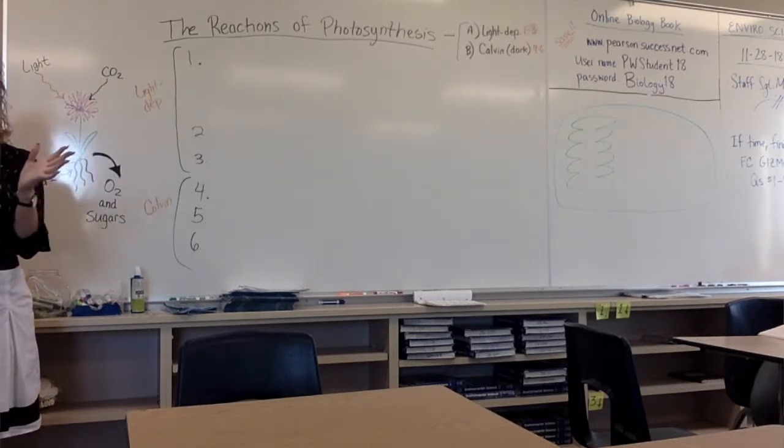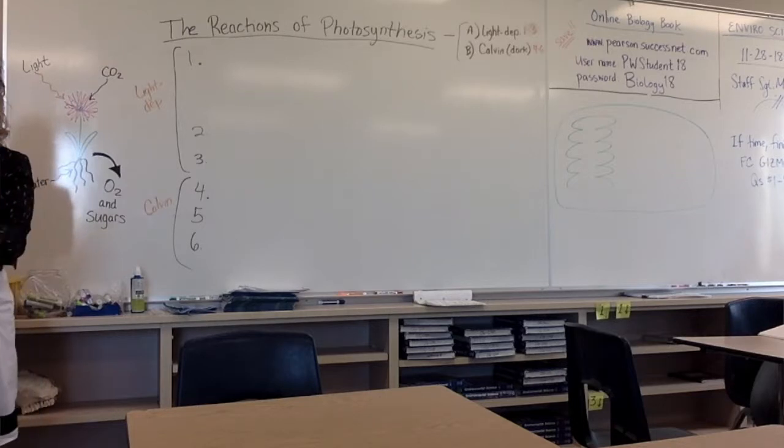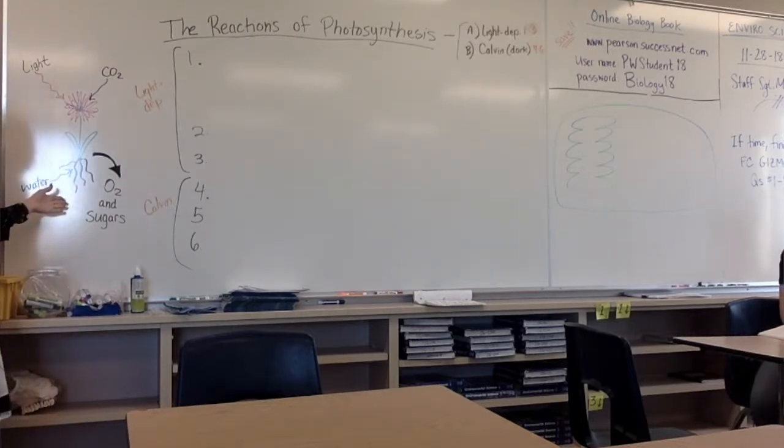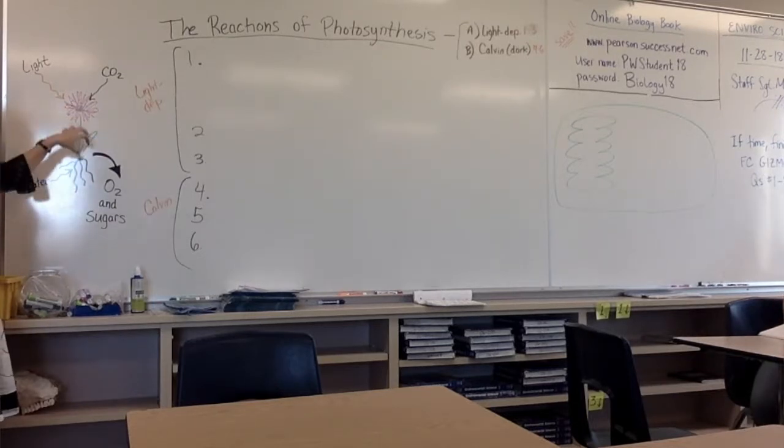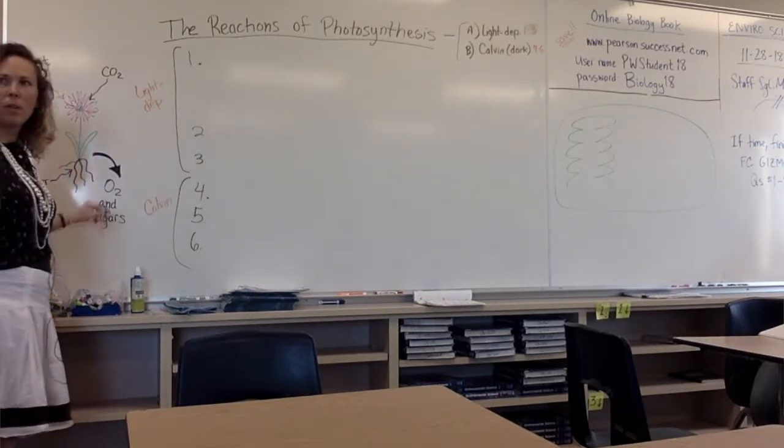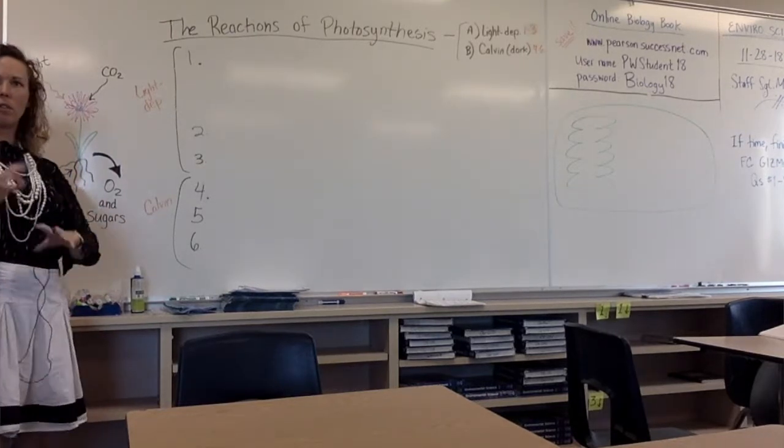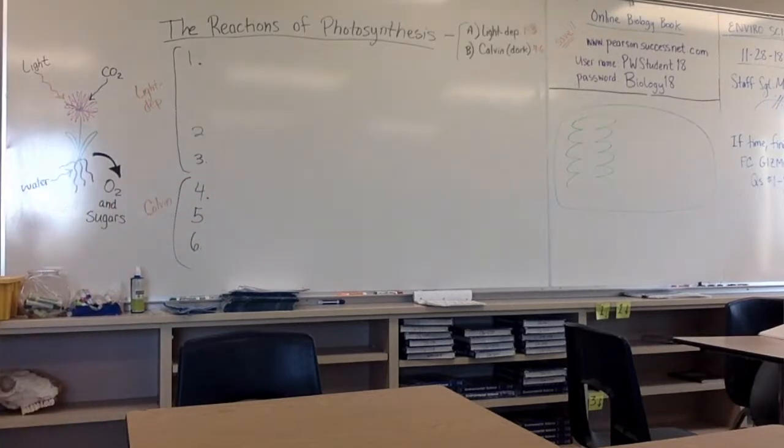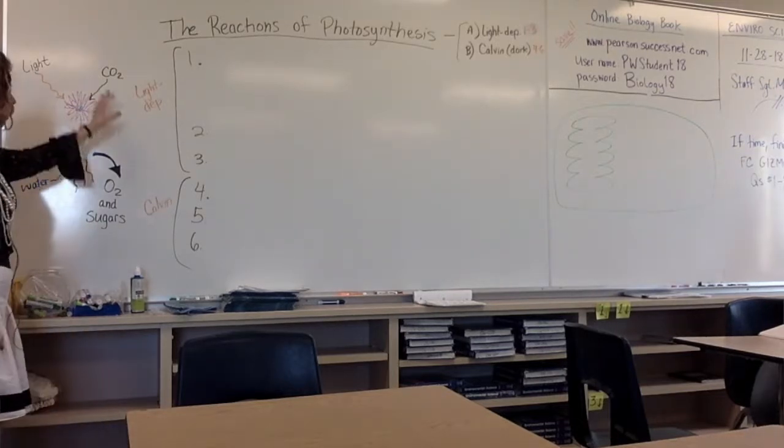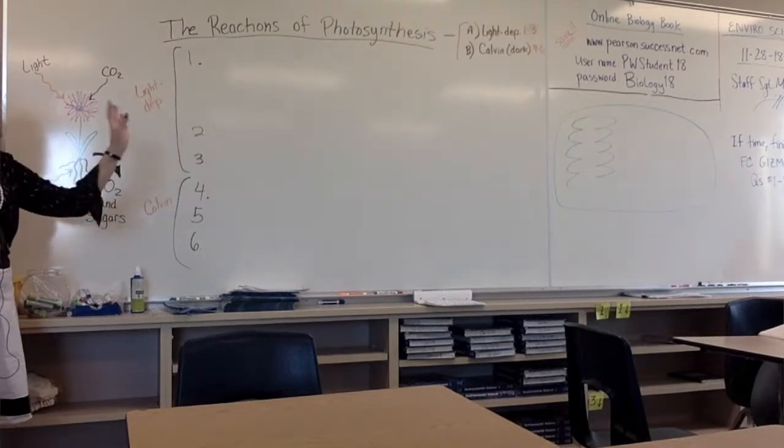Now, what I assume you know about photosynthesis is this picture. Light comes in, carbon dioxide comes in, water comes in, plant does some cool chemistry, and oxygen and sugars come out. That's what I know you guys know. And you may know it more or less than that, but that is basically what I know you know.